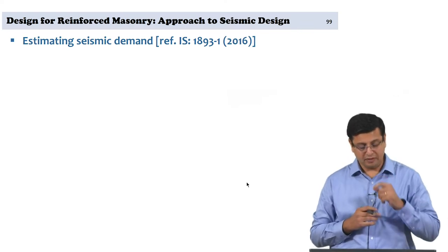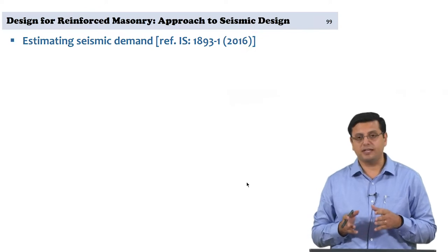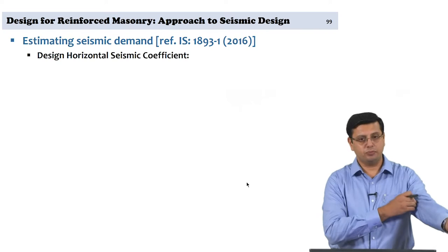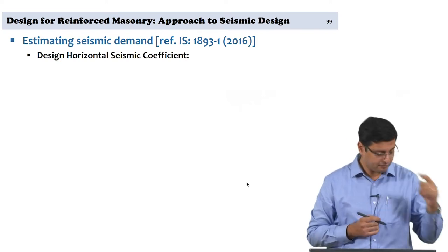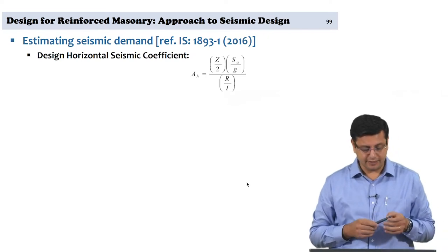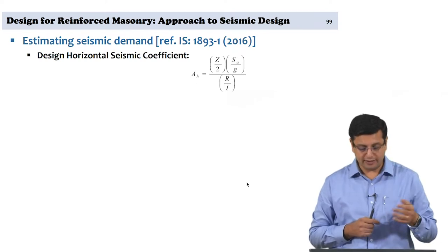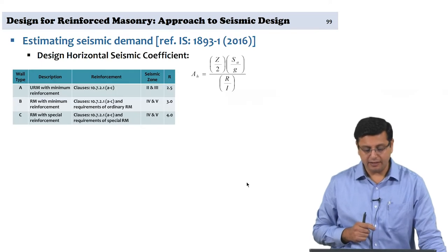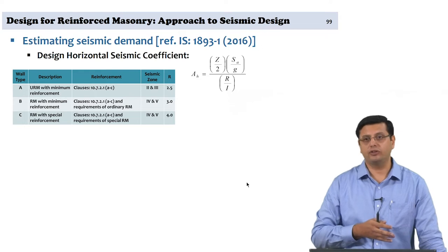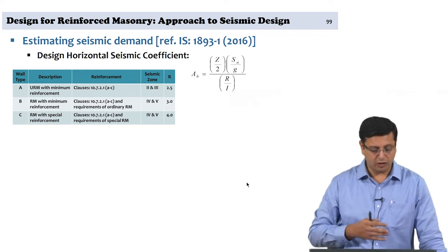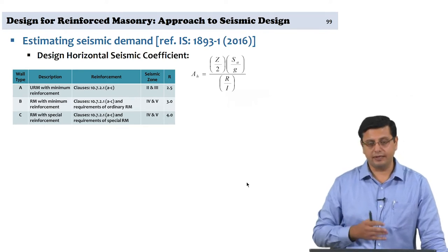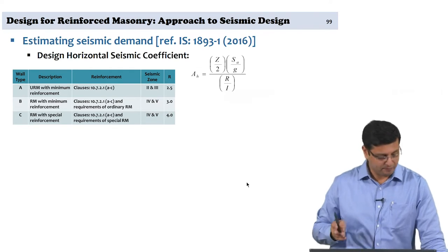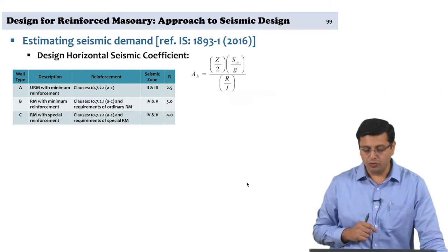With respect to the code IS 1893 Part 1, we have seen how the horizontal design seismic coefficient AH has to be defined for the building you are designing. AH requires the zone factor Z divided by 2, SA by G from the design horizontal acceleration response spectrum, the behavior factor R based on ductility level (reinforced or unreinforced masonry per IS 4326), and the importance factor based on occupancy and use of the building.